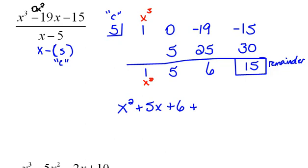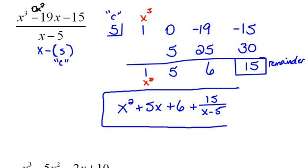And we have a remainder of 15. Our remainder has to be written as 15 over x - 5, or our divisor. So this is how we would use synthetic division to work that problem out.